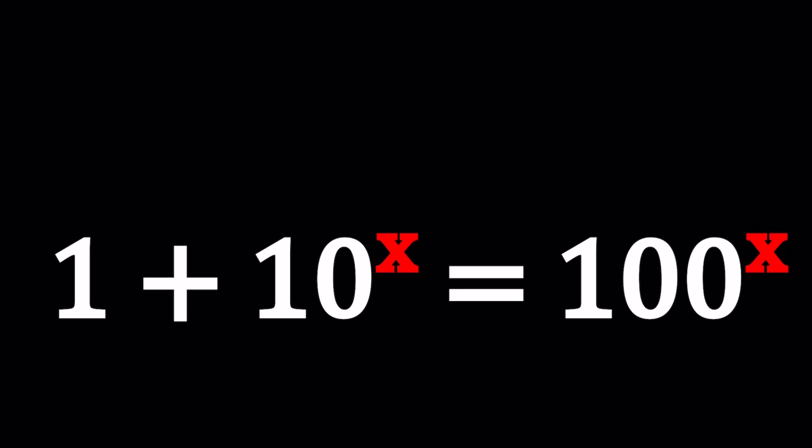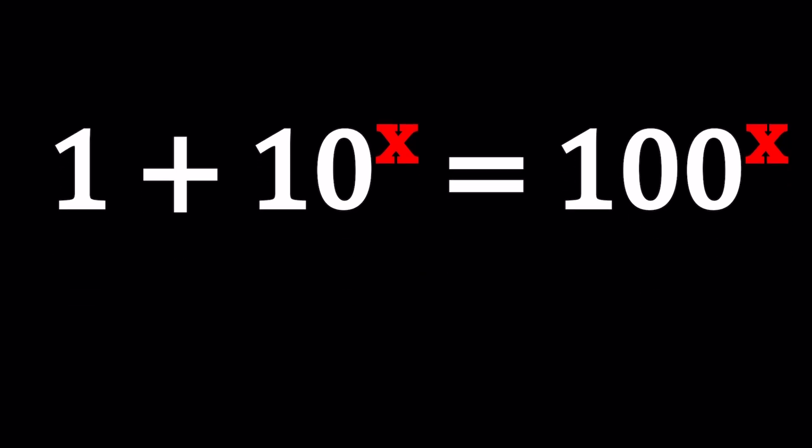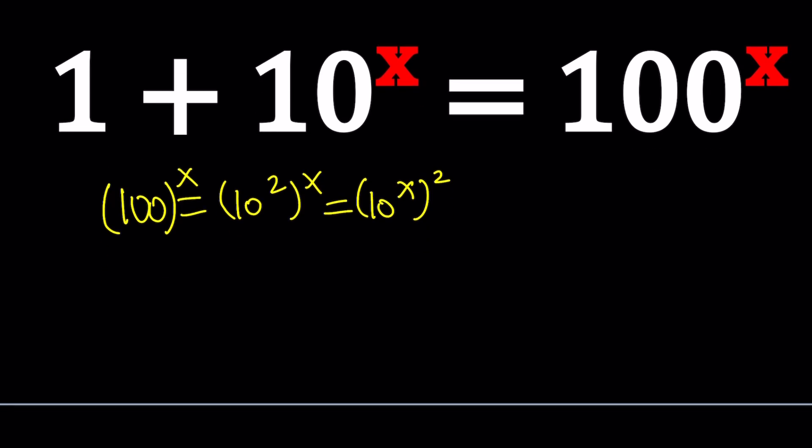So to be able to solve this problem, I'm going to use substitution. Since 100 is 10 squared, we can raise both sides to the power x. And that gives us 10 to the power x to the second power because I can interchange those exponents. And from here, if we call this something, what about y? Then we get 1 plus y equals y squared. Because if this is y, then this will be y squared.